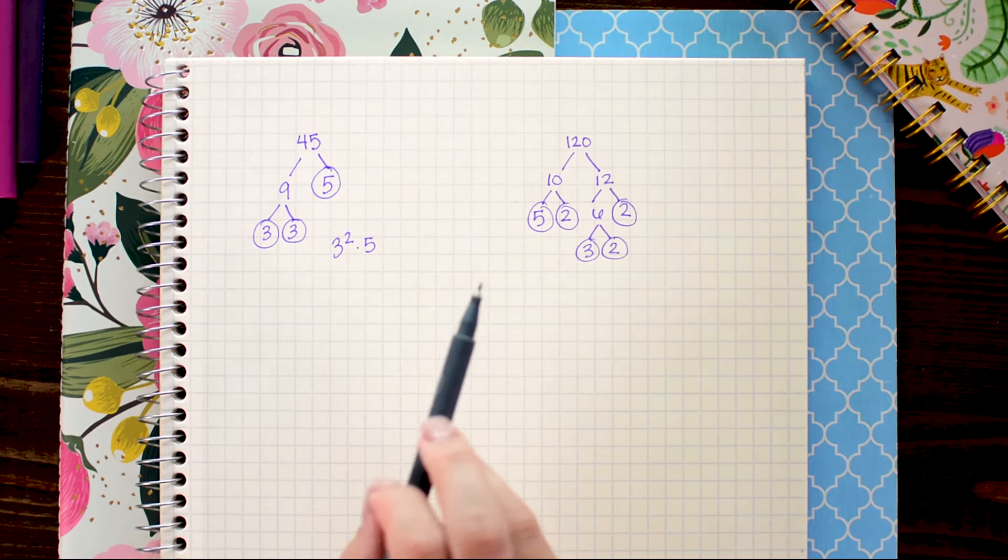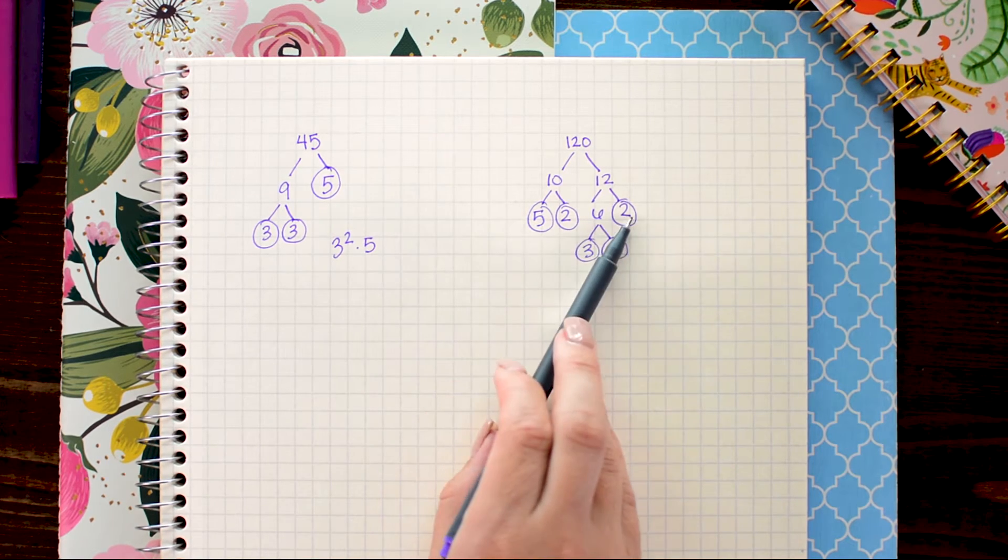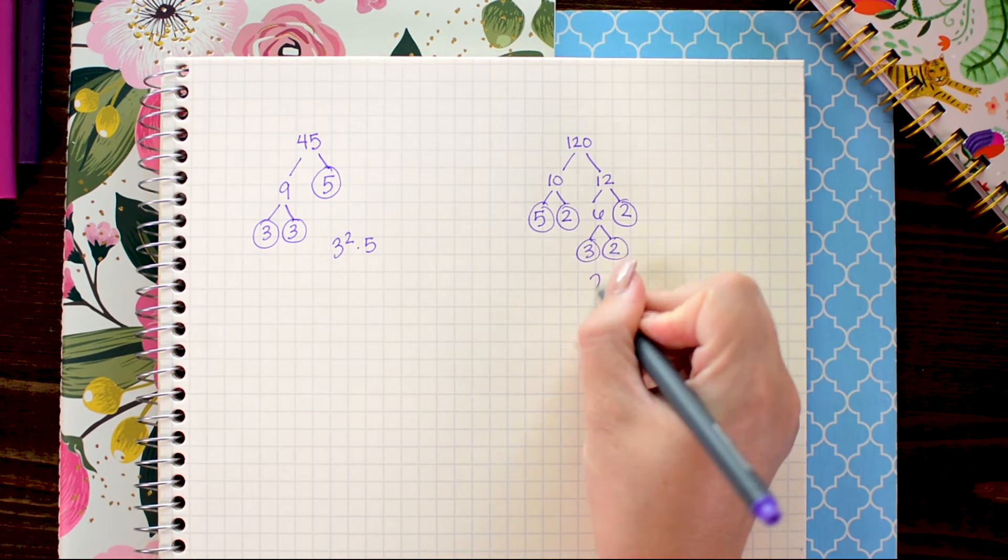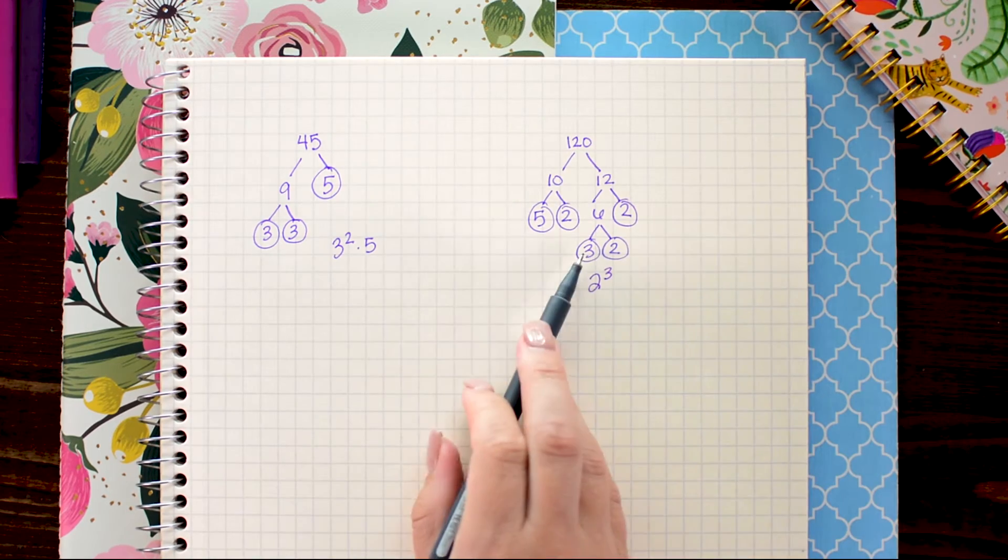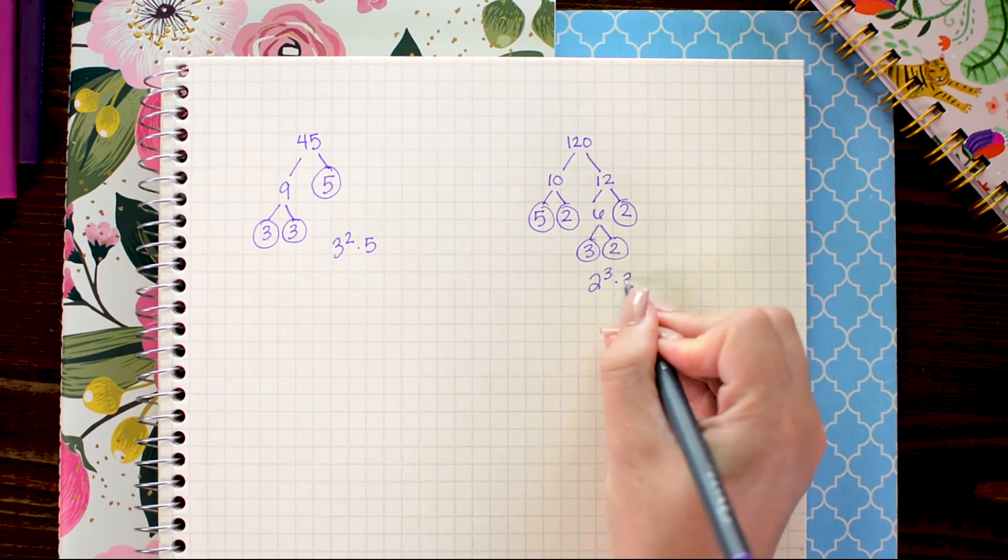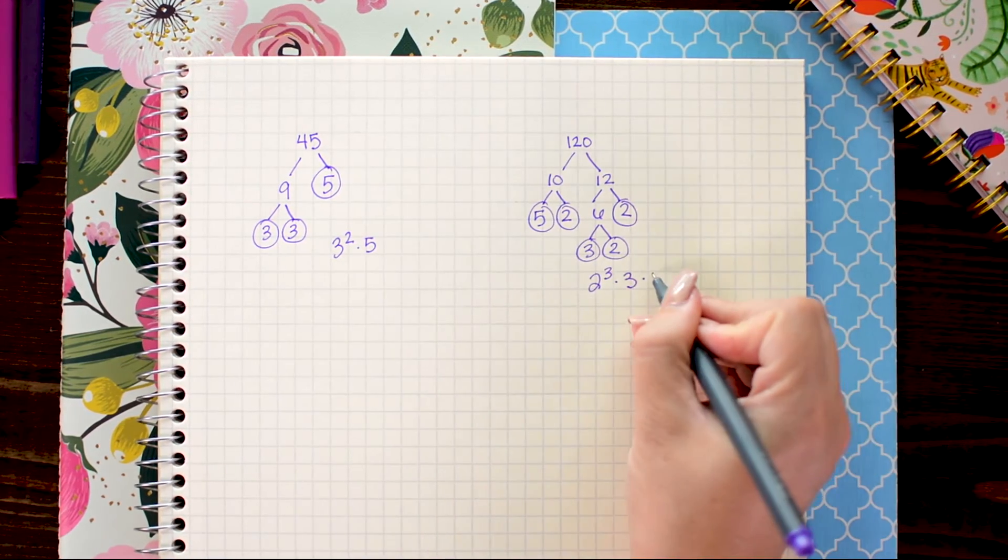I'm just going to see what numbers I have. I have three 2's so that's going to be 2 cubed, a 3 times 3 and a 5 so times 5.